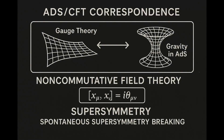Modern quantum field theory has expanded its domain to encompass gravity itself, most notably through the ADS-CFT correspondence, a central pillar of the gauge-gravity holographic duality. Furthermore, non-commutative field theory presents a radical extension of QFT. In this formulation, spacetime coordinates do not commute, introducing a fundamentally new geometrical and physical structure. Remarkably, this framework not only preserves supersymmetry but is also the only known setting in which supersymmetry can break spontaneously, offering new possibilities in both high-energy physics and quantum gravity.